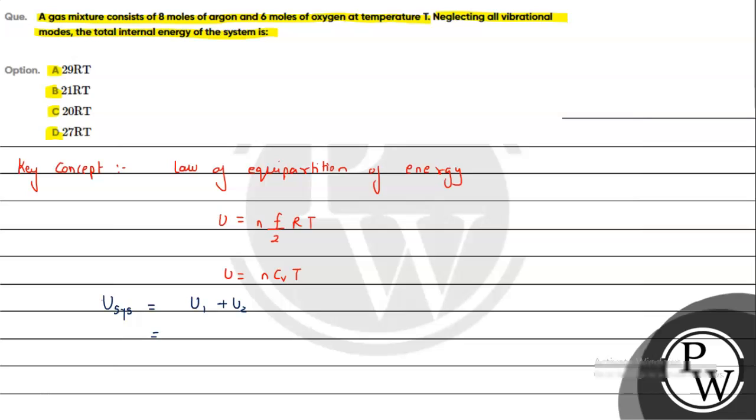Here we have two gases given, argon and oxygen. Argon is a monoatomic gas, so N is given as 8, F for monoatomic is 3, so degree of freedom is 3 by 2 into RT. Plus for U2, we write 6 into, since oxygen is diatomic, degree of freedom will be 5, so 5 by 2 into RT. If we solve this, this will be 12RT and this will be 15RT.